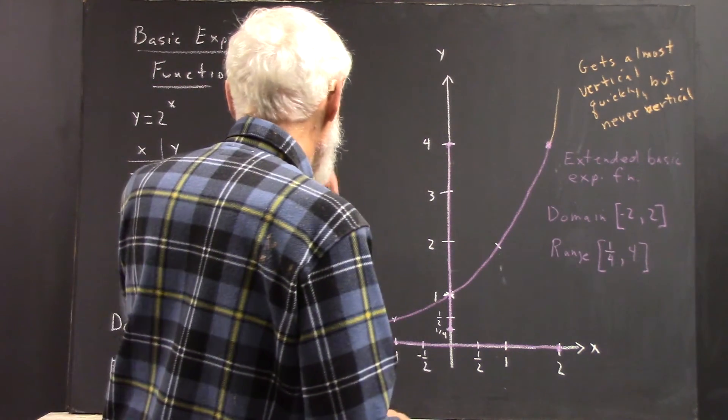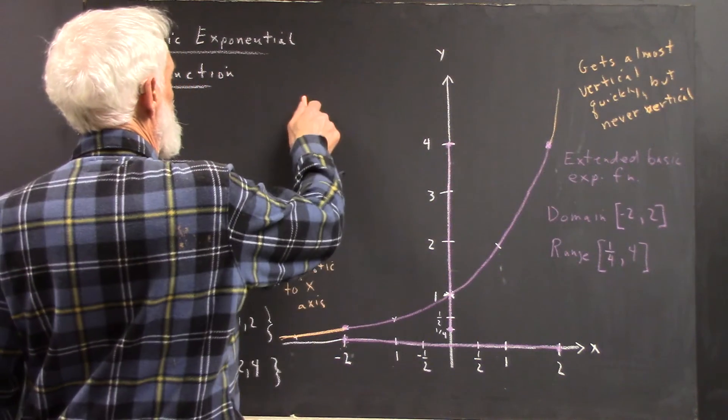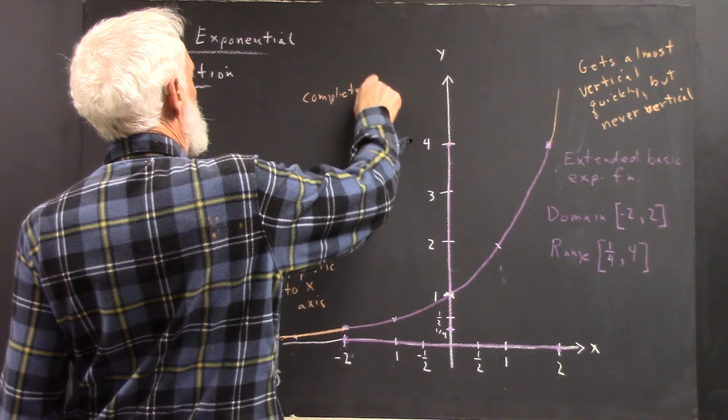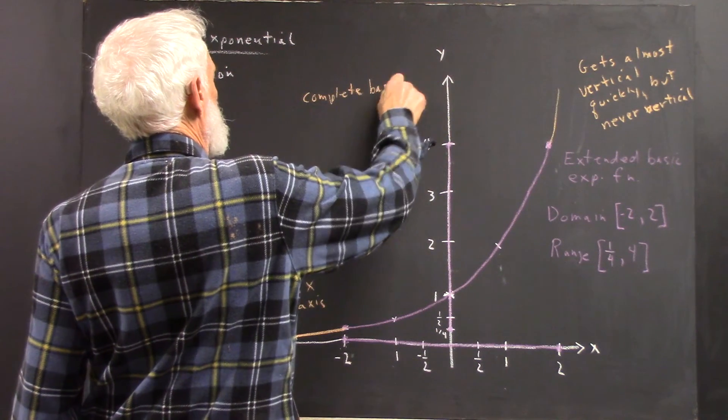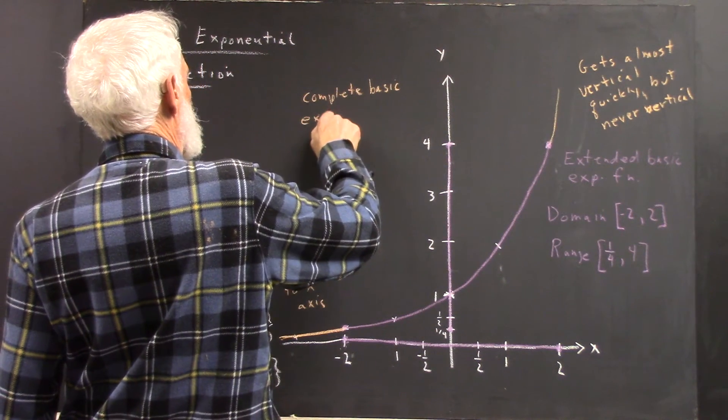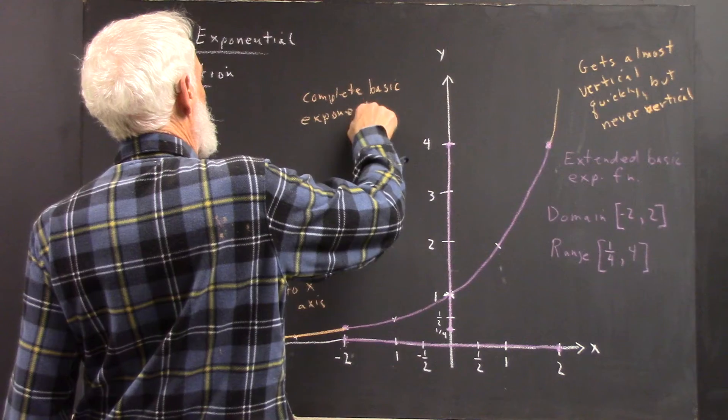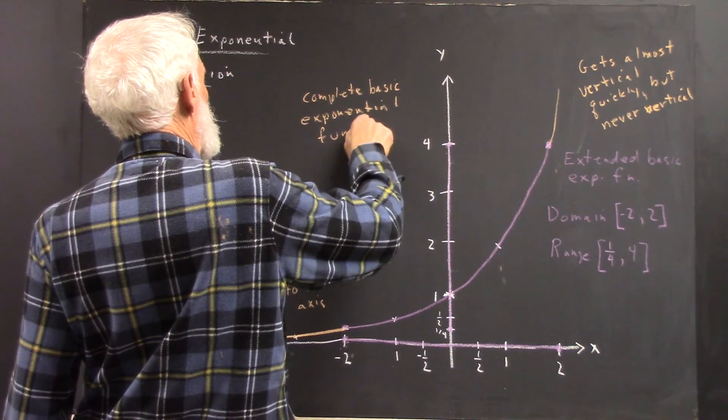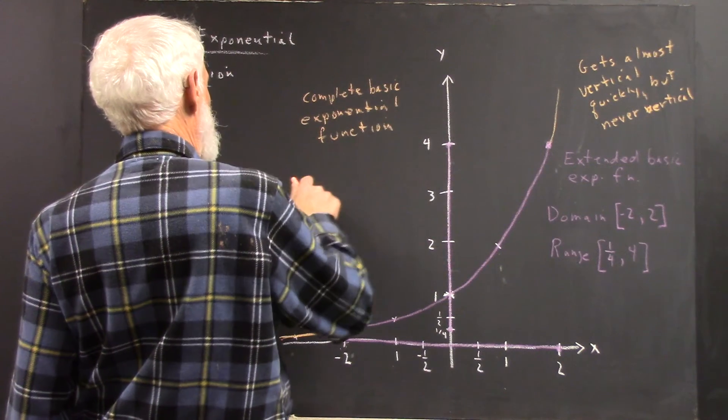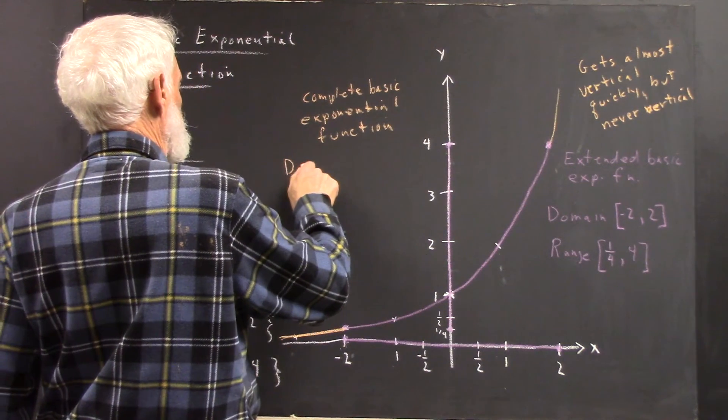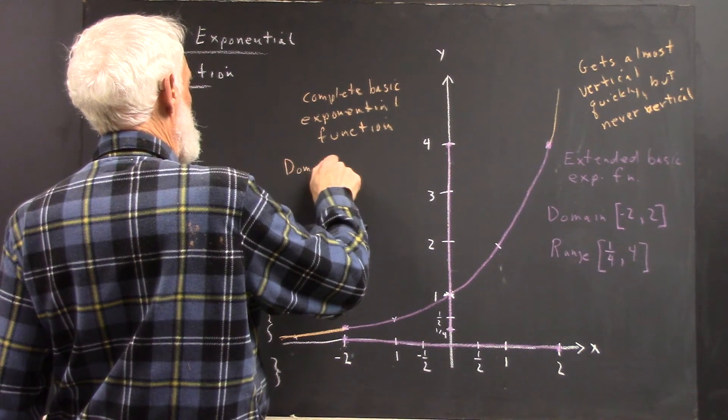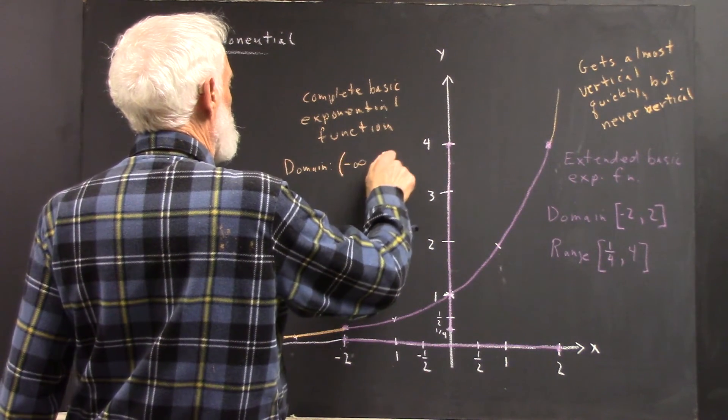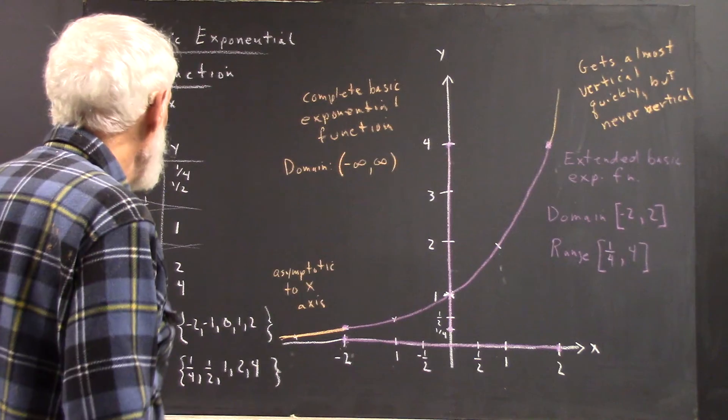For the complete basic function, then, the domain is all real numbers, from negative infinity to infinity.